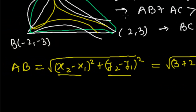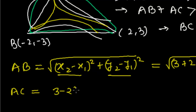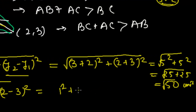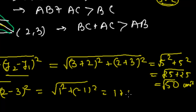Now let me find out the distance AC. A is (3,2) and C is (2,3). Difference of x-coordinates is 3 minus 2, and difference of y-coordinates is 2 minus 3. So it is √(1² + (-1)²) = √(1 + 1) = √2 units.